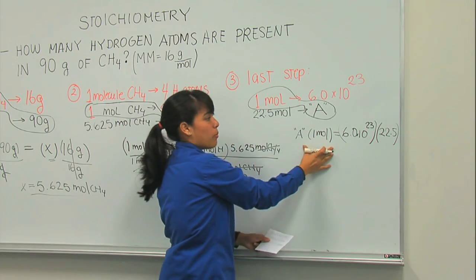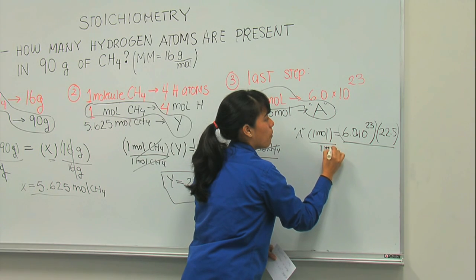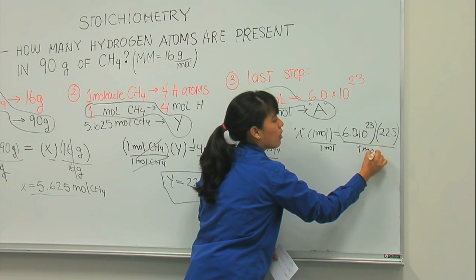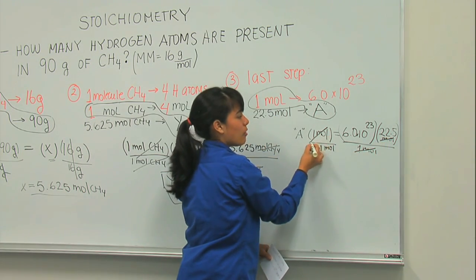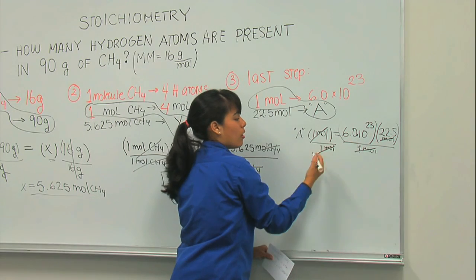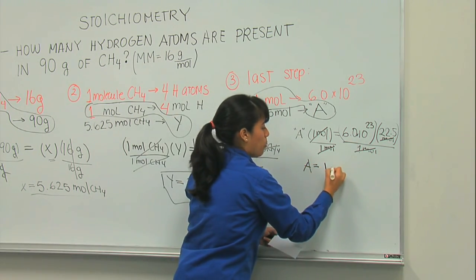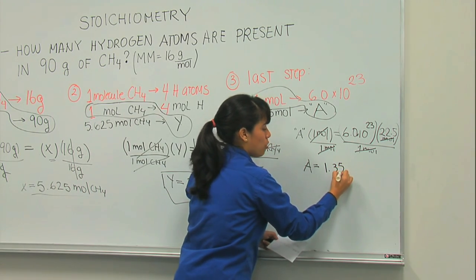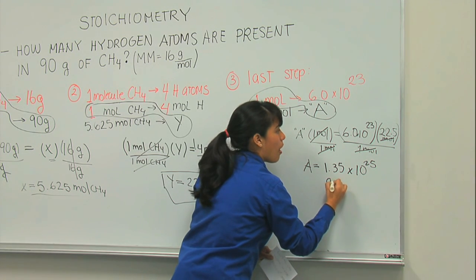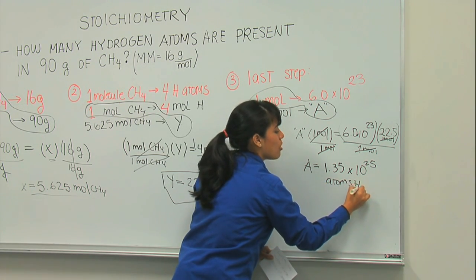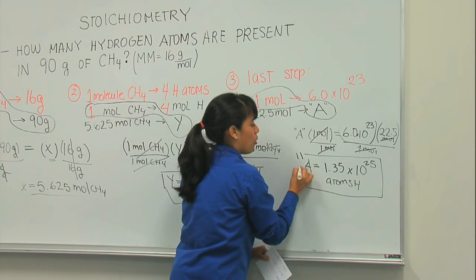And obviously, I have to divide by 1 mole. We divide it by 1 here. Divide it by 1 here. And this is mole. So moles get canceled. And after you do the math, the answer is 1.35 times 10 to the 25 atoms of hydrogen. And this is the final answer of the problem.